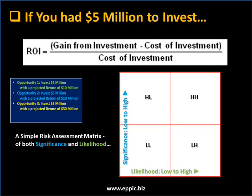A simple risk assessment matrix looks at both significance and the likelihood of those risks. In the bottom left quadrant, we have low significant risk and a low likelihood. Up in the top right, we have a risk that is high significance and highly likely. We need to be looking at each Opportunity 1, 2, and 3 to add to our ROI view in terms of what to do with our $5 million to invest. Should we put it all into Opportunity 3? It depends on the risks inherent and their significance and likelihood. This is a simplistic example, but it demonstrates that it's not so simple as doing the math of ROI — other factors need to be taken into consideration.